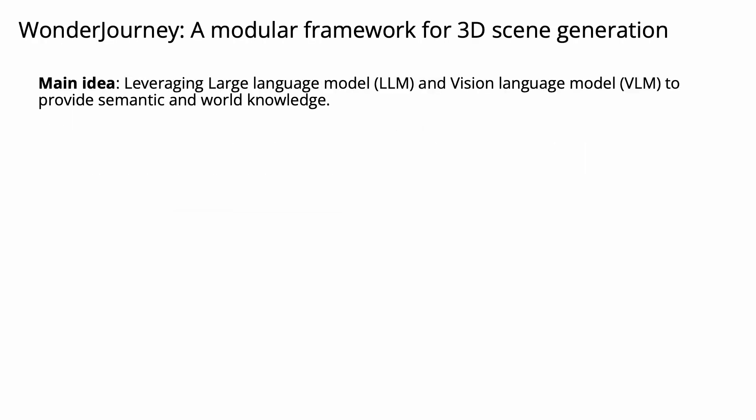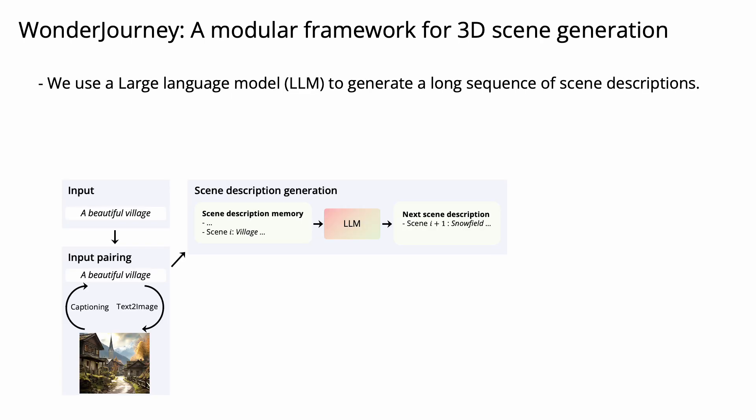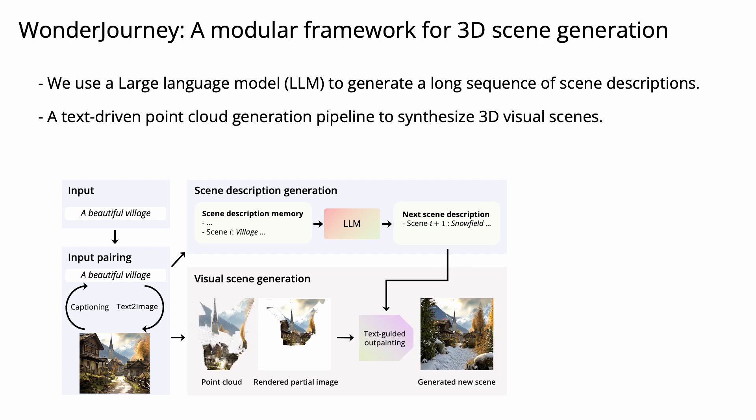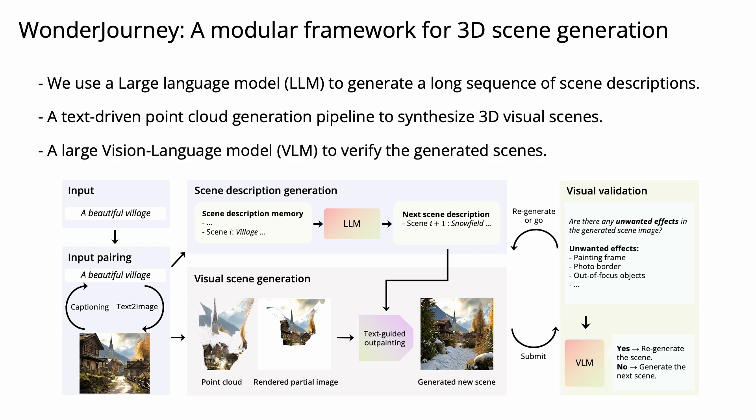We propose Wonder Journey. The main idea to address the challenge is to leverage a large language model and vision language model to provide semantic and world knowledge. In particular, we use a large language model to generate a long sequence of scene descriptions. Using this generated scene text as high-level guidance, we design a text-driven point cloud generation pipeline to synthesize 3D visual scenes. To ensure that the generated scenes are plausible, we propose a visual validation module that leverages a large vision language model to verify the generated scenes.